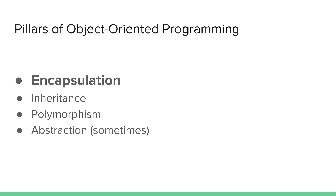Pillars of object-oriented programming are the big ideas or central ideas of object-oriented programming. Depending on who you ask, you'll get a list of either three or four items that are pillars of object-oriented programming. But regardless of how the list is laid out, the concept of encapsulation is always present in some form.